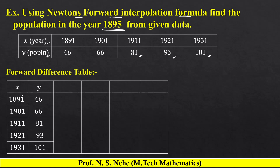Table में first column में values of x, second column में values of y, third column में first forward difference Δy लिखेंगे। यहाँ पर 66 minus 46 which is 20, then 81 minus 66 which is 15, then 93 minus 81 which is 12, and last 101 minus 93 which is 8.